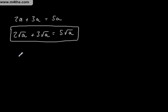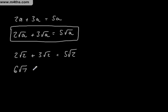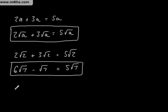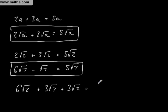We're going to look at multiplication, addition, and subtraction. If I've got 2√2 plus 3√2, then I've got 5√2. In the same way, if I had 6√7 minus √7, then I've got 5√7. And looking at 6√2 plus 3√7 plus 3√2, then we've got 9√2 plus 3√7. When you're adding or subtracting surds, you add them as if they're a's and b's in algebra.